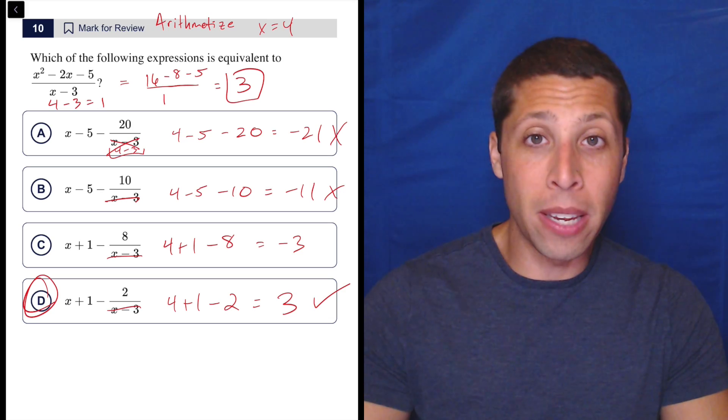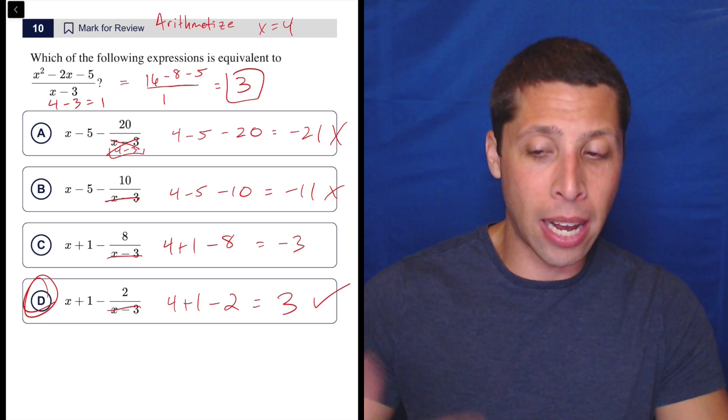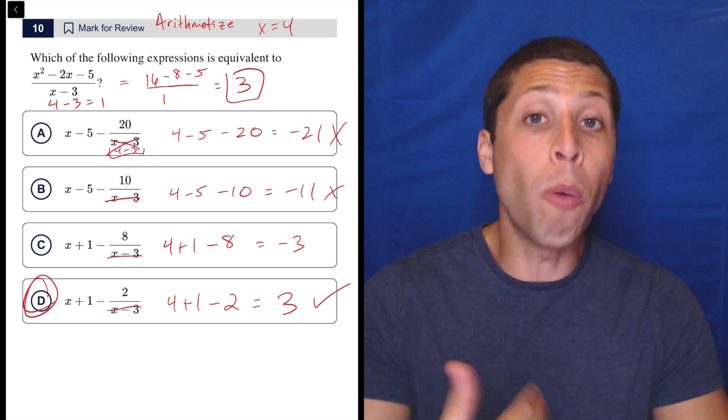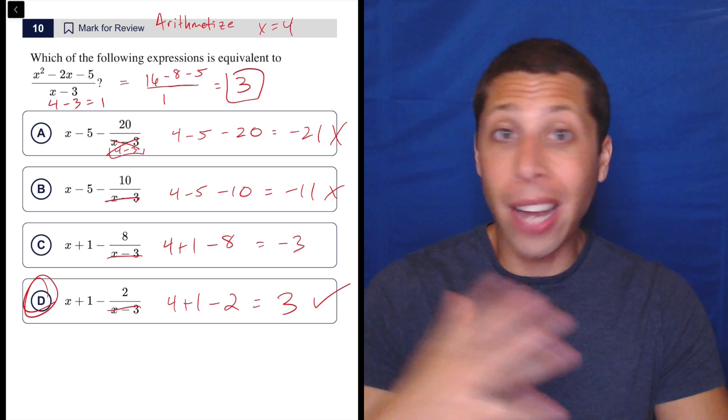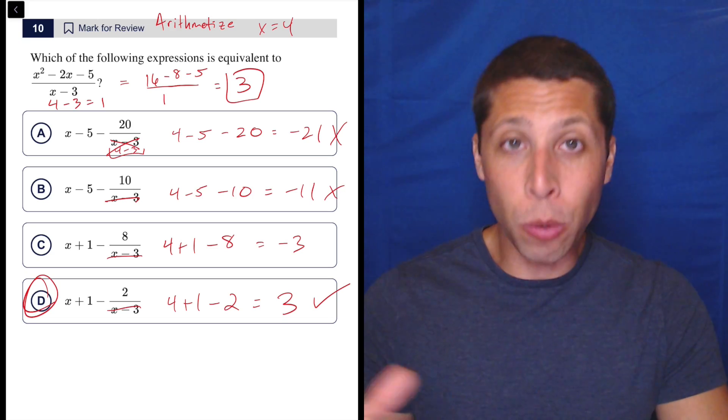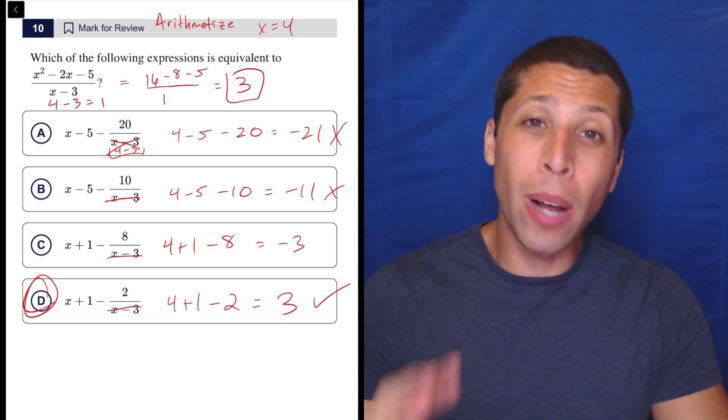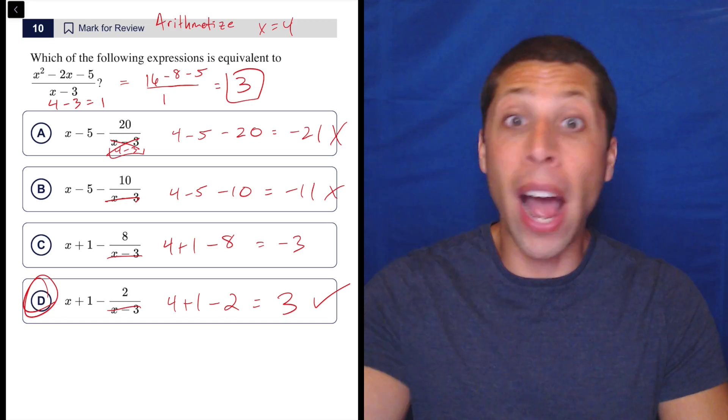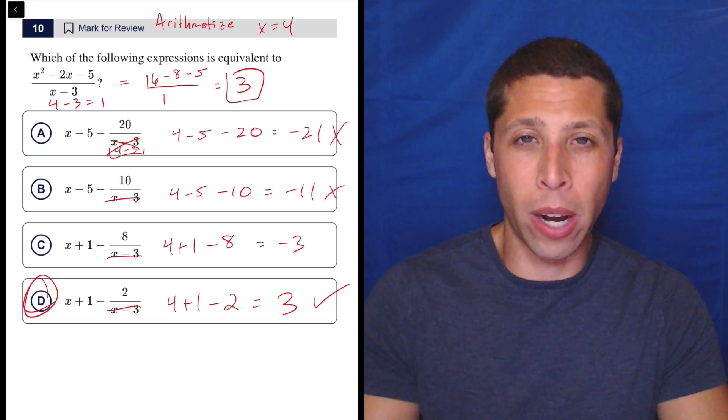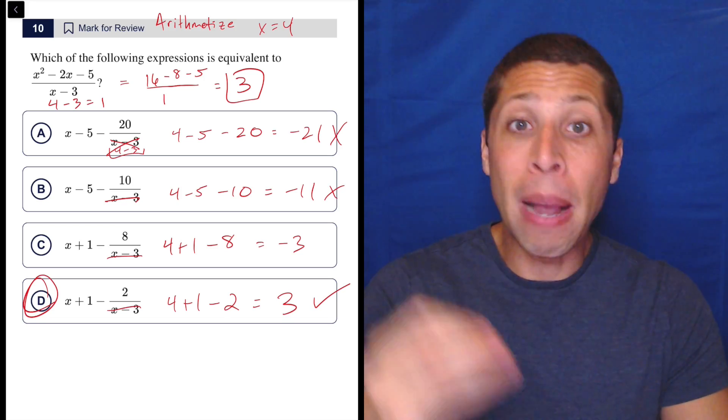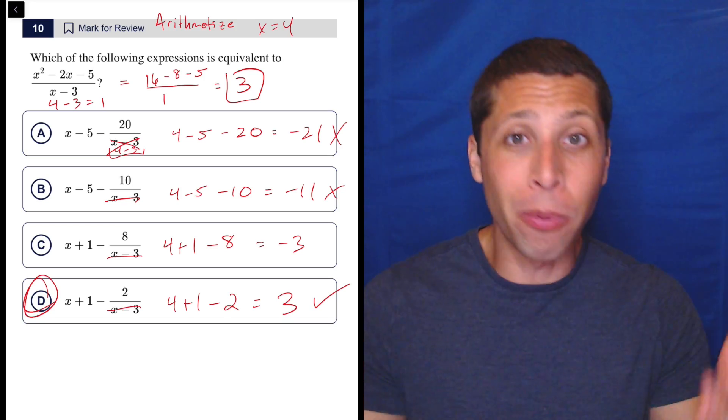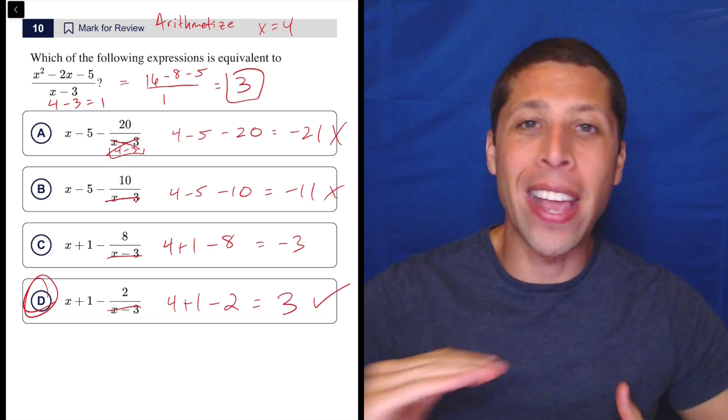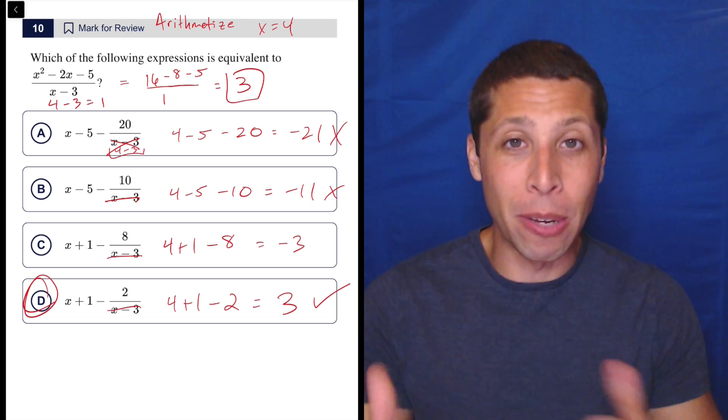But also we need to be clever enough with Arithmetize that we start to recognize those situations where maybe picking zero and one won't be the best option. If you got no clue, just pick them. It can't hurt. But if you start to get smart about it, you might say, well, if I pick this other number, maybe it kills off a fraction or kills off a negative or something, a radical, right? So there's lots of situations where picking other numbers might be better. So just start to think about that as you now have hopefully gotten better at Arithmetizing overall, you can start to get to that next advanced level of Arithmetizing that we need for questions like this.